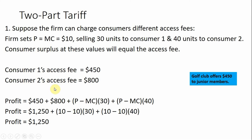Consumer one's access fee and consumer two's access fee — let's plug that into the profit equation. Profit for the firm is the access fee from consumer one plus consumer two, plus price minus marginal cost times units sold to consumer one, plus price minus marginal cost times units sold to consumer two. Since average cost equals marginal cost, profit per unit is zero. So total profit is $1,250.